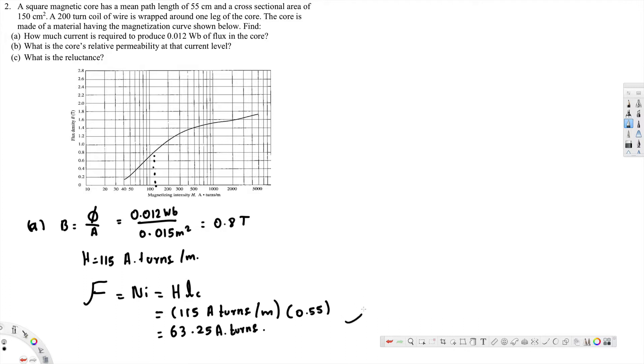Now here we're asked to find out the current. Current I is equal to magnetomotive force divided by the number of turns. The magnetomotive force we just calculated is 63.25 ampere turns divided by 200 turns. That gives us 0.316 ampere. This is part A.